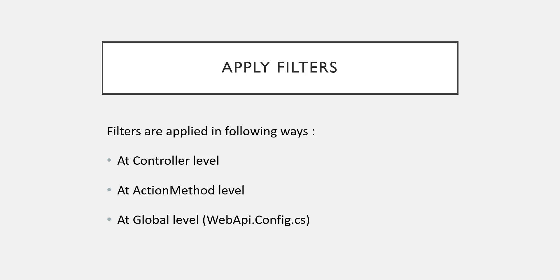The next thing is how to apply filters once you create one. There are three ways: you can apply it at the controller level, in which case it applies to each and every action method in that controller by default. If you want to limit it, you can specify the filter over a specific action method. Or, if you want to apply a filter globally, you can register it in WebApiConfig.cs. In upcoming videos we'll see all these details one by one practically. If you have any doubts, please write in the comment box. Thank you for watching.